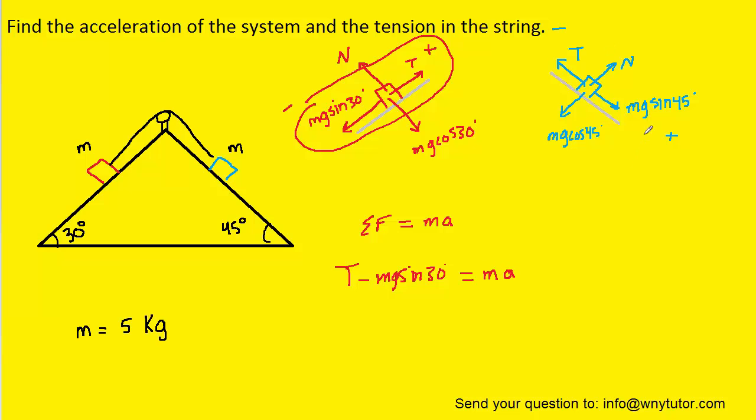And then over on the other object, we have a similar situation, except in the positive direction we have mg times the sine of 45. So that's a positive force because it's going in the positive direction, and then the tension here is negative. So we have minus T, and we'll set that equal to ma.